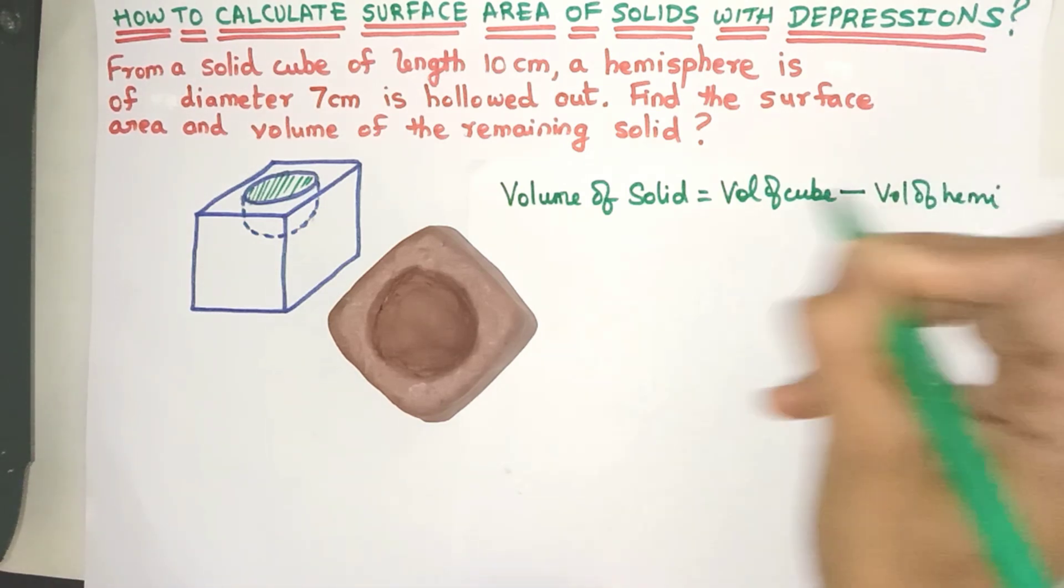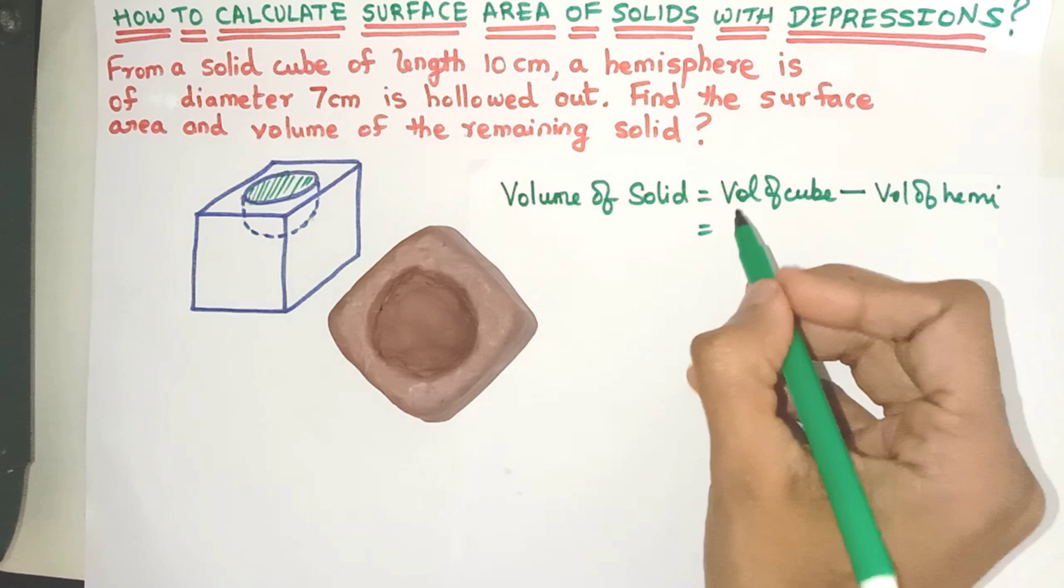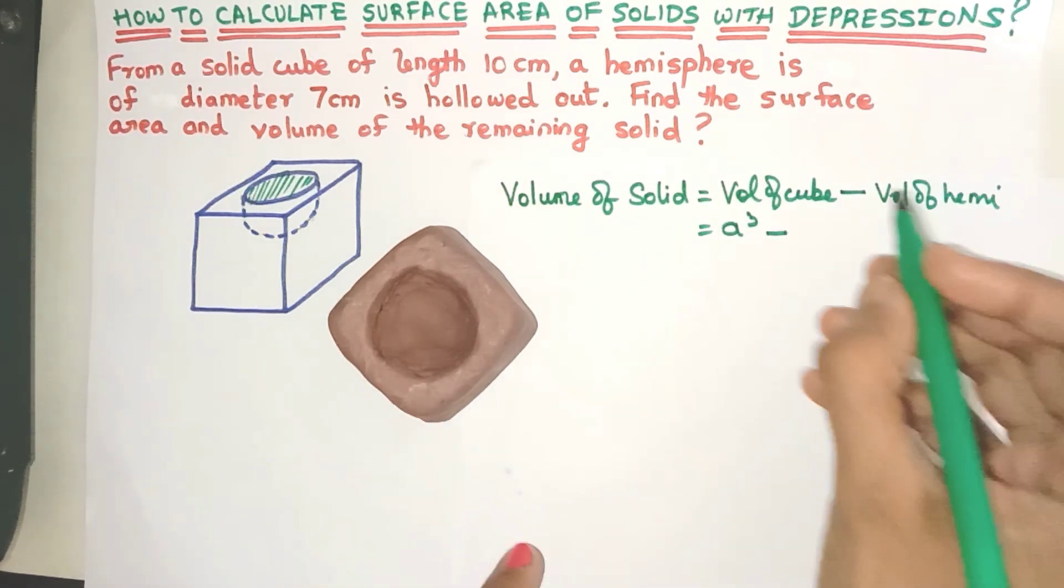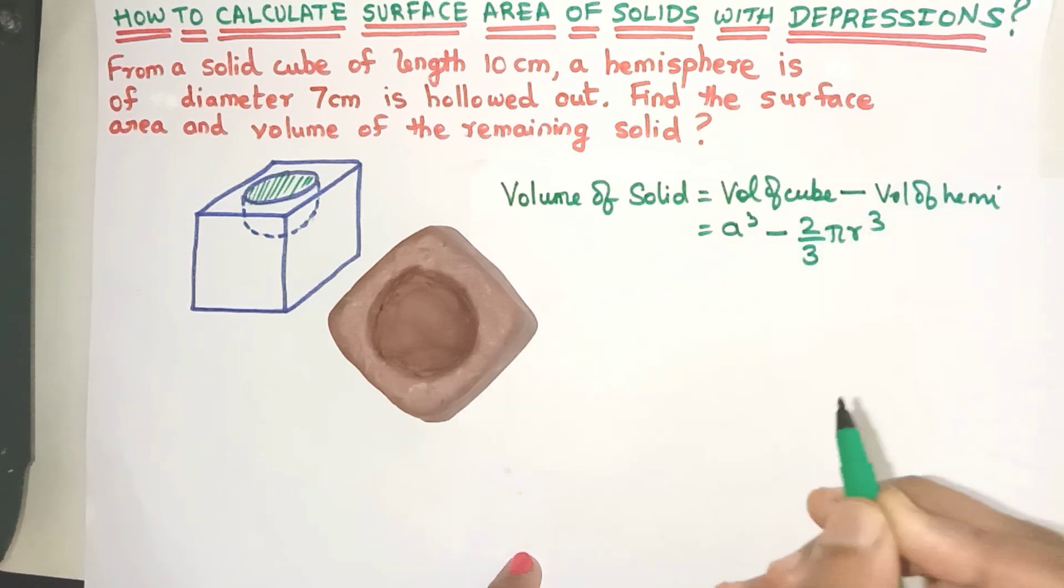Now what is the volume of the cube? Yes, a³ where a is the side of the cube, minus the volume of the hemisphere is 2/3 πr³ where r is the radius of the hemisphere. Now let's substitute the values.